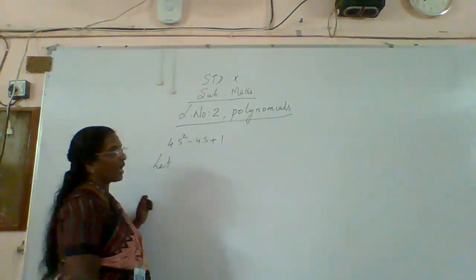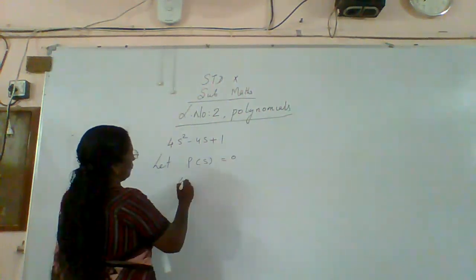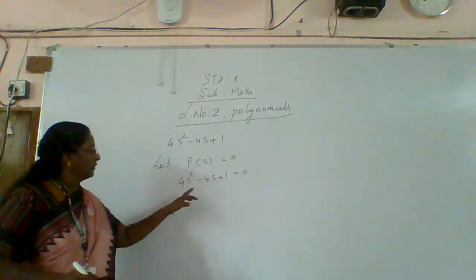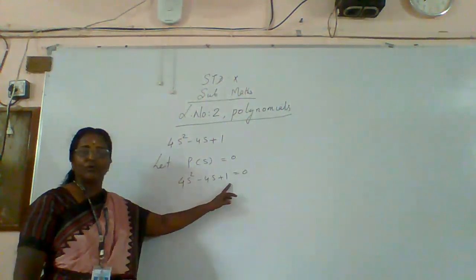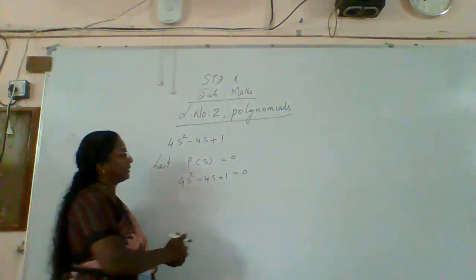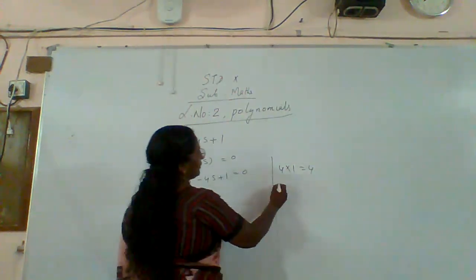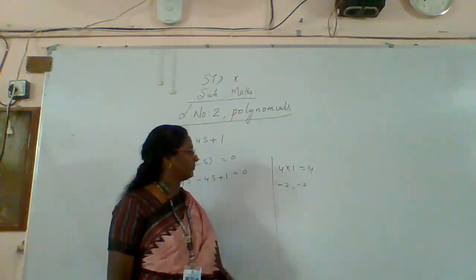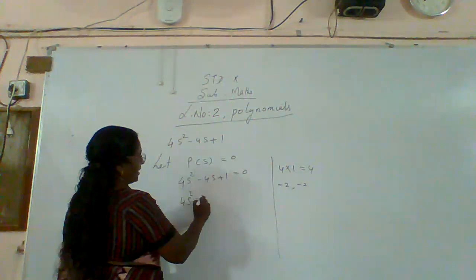So I will write P of s, then P of s is equal to zero — that is four s square minus four s plus one equal to zero. You should be doing four into one, which is four. Find out two numbers where the product is four and the sum is minus four. The numbers are minus two and minus two: minus two into minus two becomes plus four, and minus two plus minus two becomes minus four.